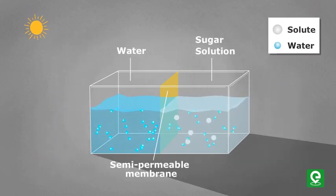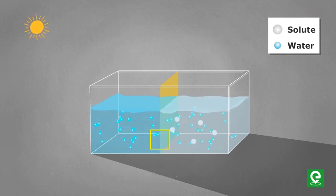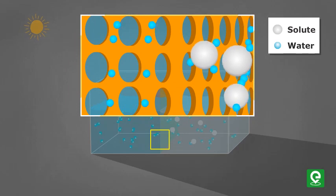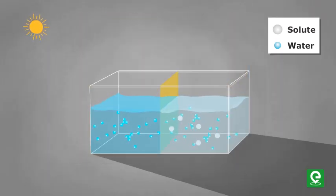Osmosis is defined as the net flow or movement of solvent molecules through a semi-permeable membrane through which solute molecules cannot pass.